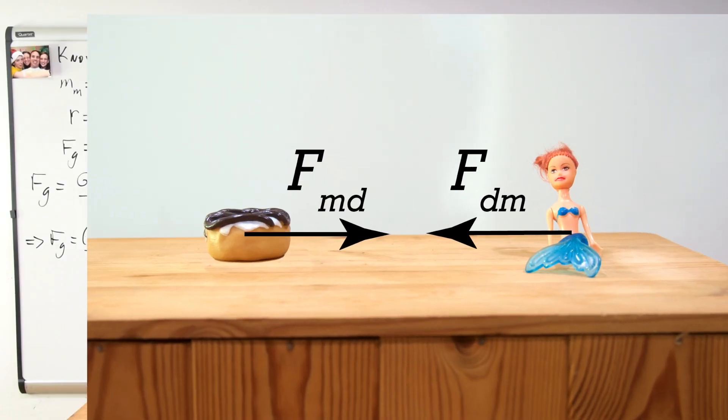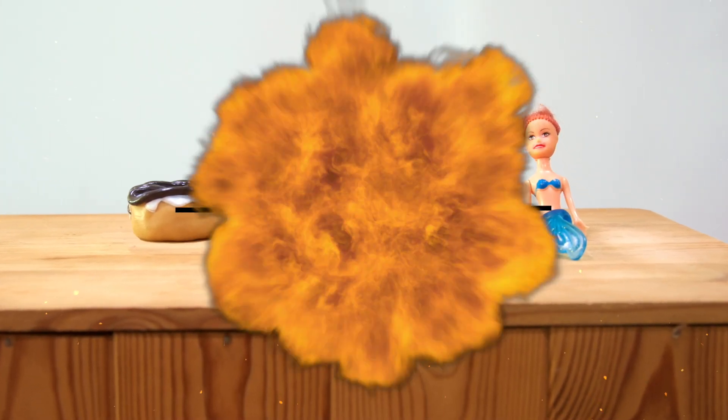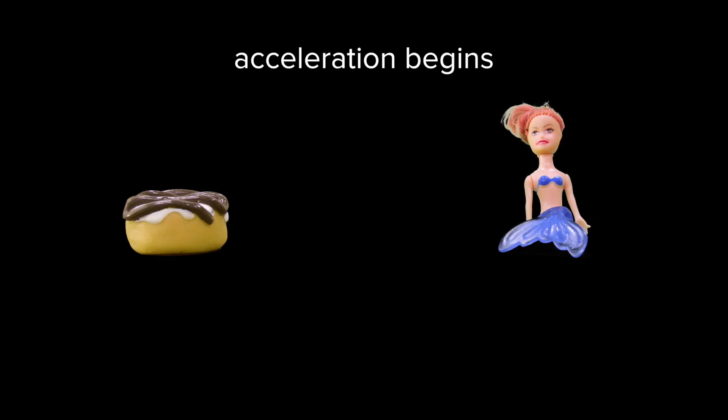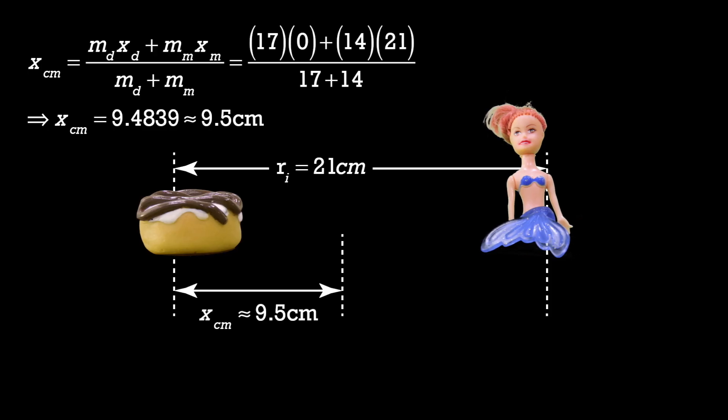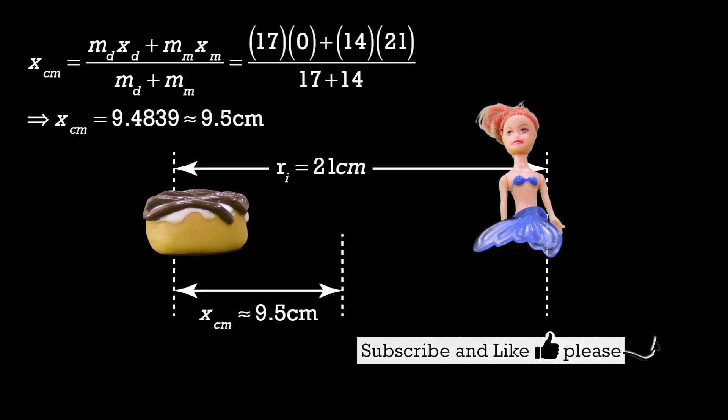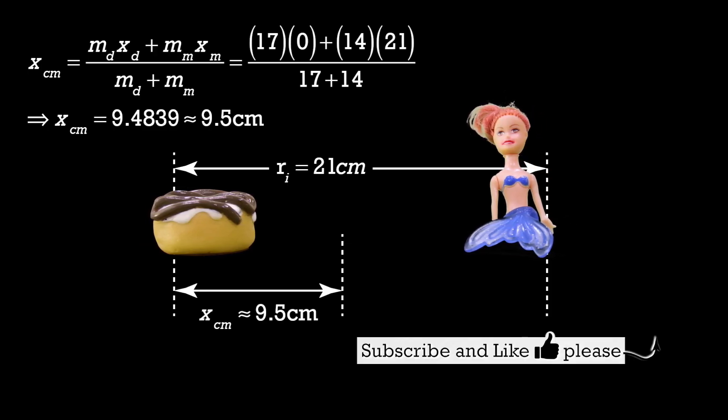But what if the mermaid and the donut were the only two things which existed in the universe? Well, what would happen then? The mermaid and the donut would slowly accelerate toward one another until they met in the middle. That's very close. They would accelerate until they meet at the center of mass of the two object system, which would be slightly closer to the donut, because the donut has a little more mass than the mermaid.